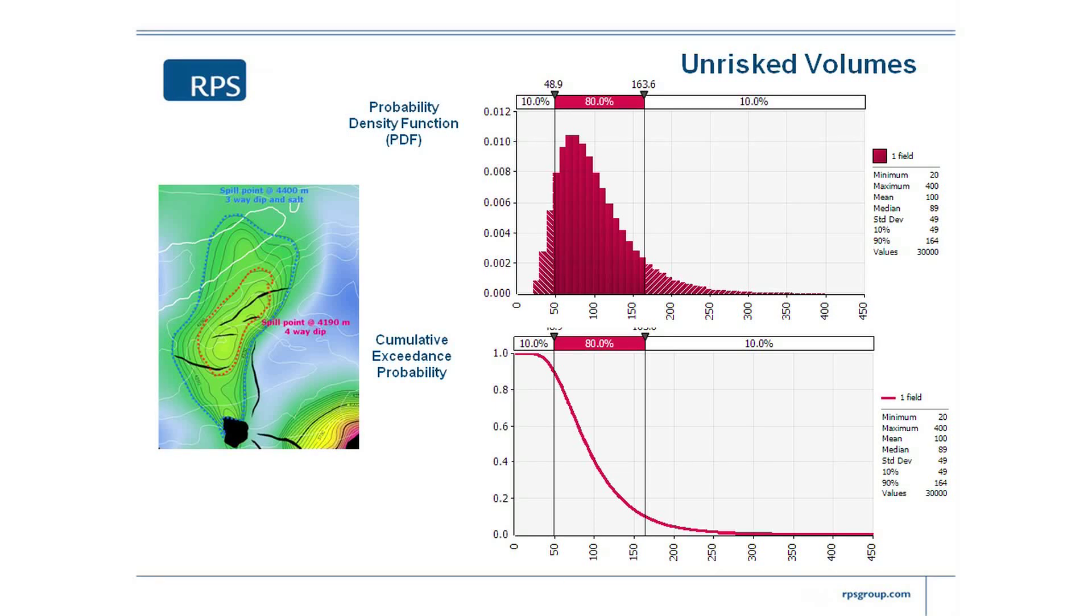So reading that, it's telling me that the smallest volume of this field could possibly be is 20 million barrels. The highest it could ever be, the maximum, which you can hardly see, is 400 million barrels. The shape tells me about the relative probability of the different volumes occurring. So clearly, the peak of that probability density function is telling me that the most frequently occurring, the modal value is about 70, 80 million barrels. So they're all quite useful numbers. Now I'm beginning to actually extract useful information from there.